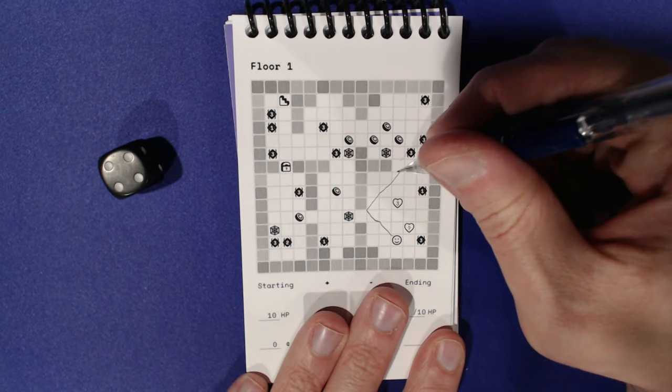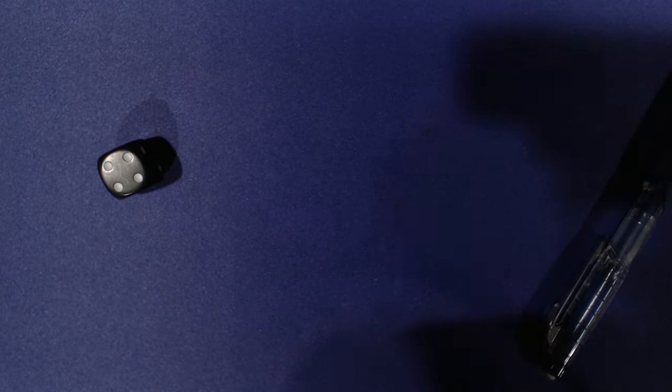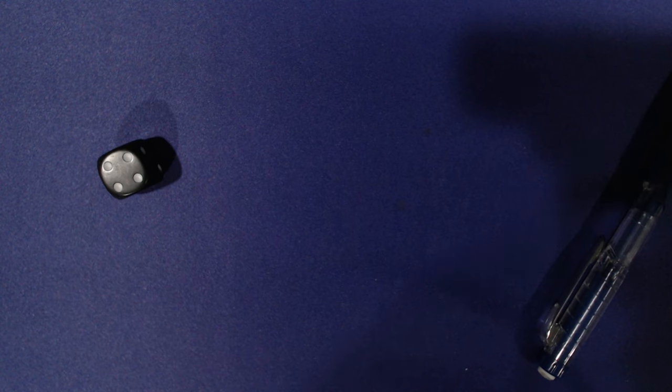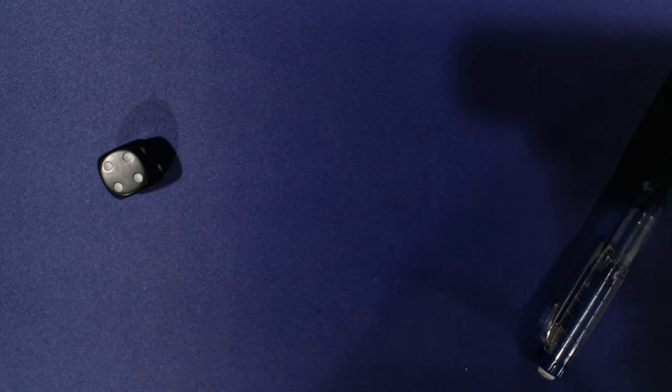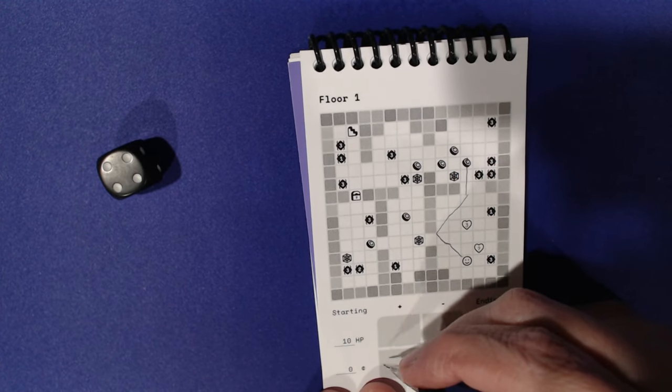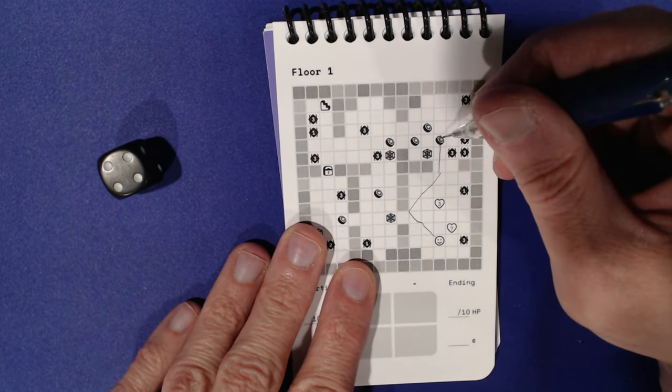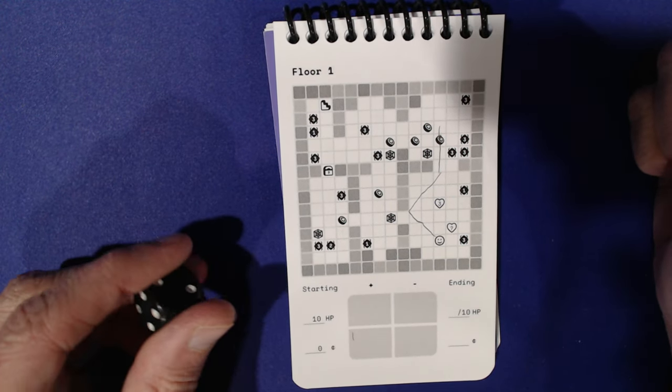So we're going to go four. One, two, three. Okay. So how many coins do I get? For each coin that you cross, add one to your coin quadrant. Okay. So we're going to add one there. And then that was one, two, three, four.